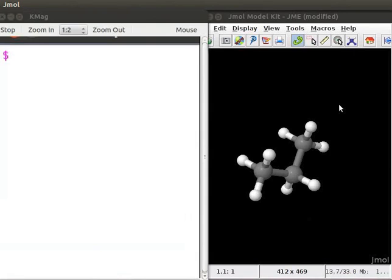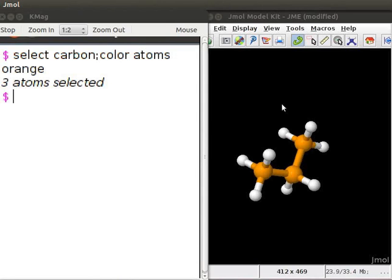I am using KMAG screen magnifier to magnify the console. For example, to change the color of all the carbons in propane to orange, place the cursor on the script console window. At the dollar prompt, type select carbon semicolon color atoms orange. Press Enter key on the keyboard. The propane model on the panel now has all the carbons in orange color.